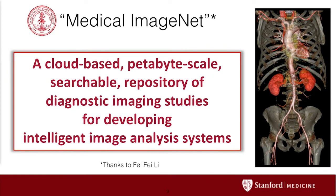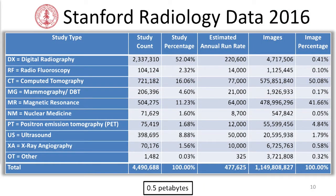We're very much focused on what we see as a major bottleneck, which is the lack of imaging data sets to train these models. So we're building what we call Medical ImageNet — a cloud-based, petabyte-scale, searchable repository of diagnostic imaging studies for developing intelligent image analysis systems in medicine. This is a look at our Stanford radiology data. We went live earlier this week on a large multi-platform clinical imaging platform. As we make that migration, this is a half a petabyte, over a billion images, 4.5 million studies growing at about 10% a year.